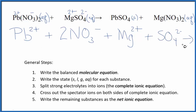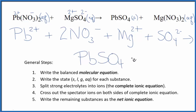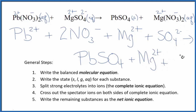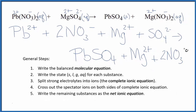So these are the reactants in our net ionic equation. For the products, we don't split solids apart in net ionic equations, so we're just going to call this PbSO4 — it stays together. Then magnesium is 2 plus and nitrate is 1 minus, so we have the magnesium ion and two nitrate ions. So these are our products.